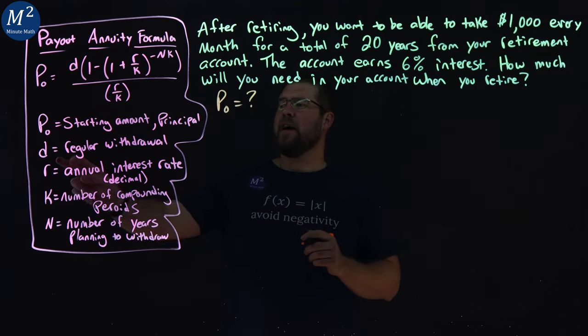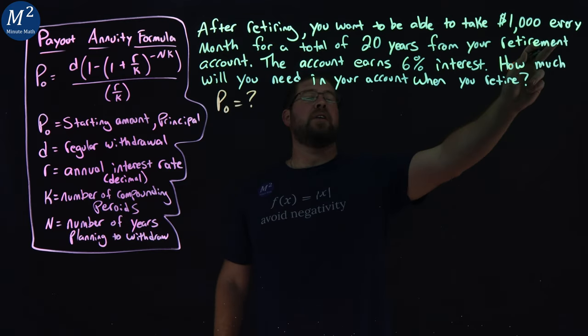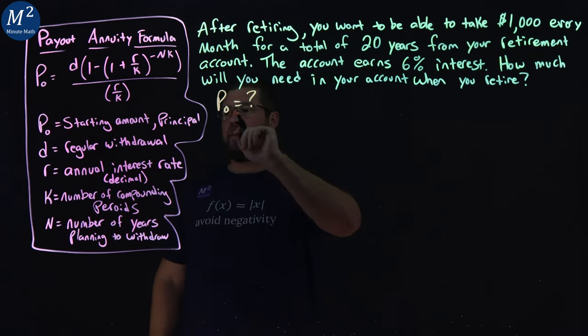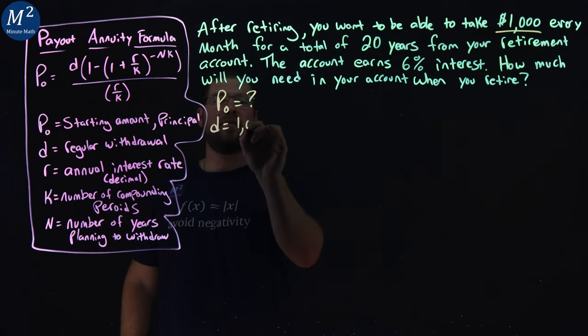Now, can we find D, the regular withdrawal? We want to draw $1,000 every month. So we're going to draw $1,000. Our D value here is $1,000.